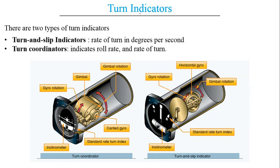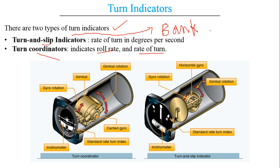Proceeding to the next category — the gyroscopic instruments. The turn indicators are based on gyroscopic instruments and there are two types: turn and slip indicators, or turn coordinators. Turn and slip indicators provide the rate of turn in degrees per second, while turn coordinators provide both the roll rate and the rate of turn. The turn and slip indicator is also known as the turn and bank indicator — slip is another term for banking. The syllabus only mentions the turn and bank indicator, which is also known as the turn and slip indicator.